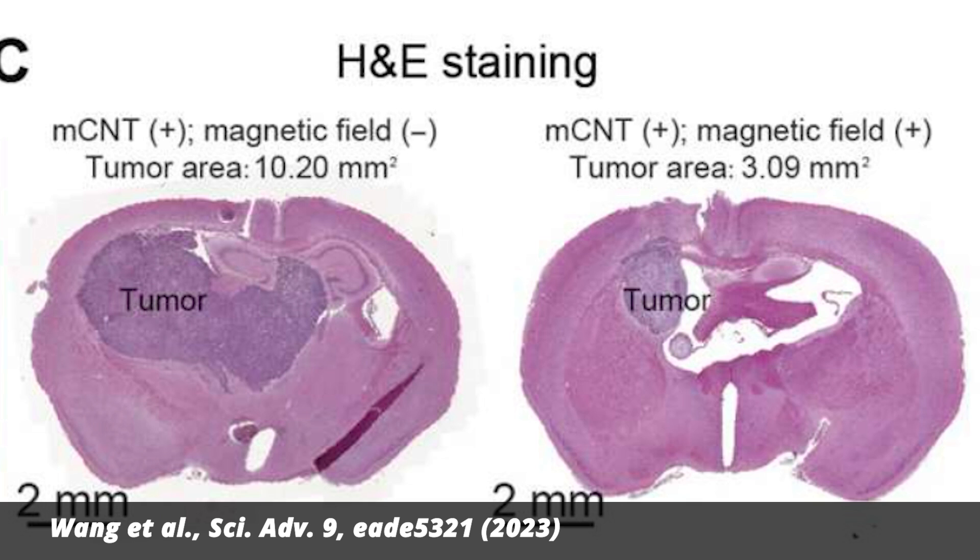You can see the difference it made for the tumors here in the diagram. The tumor on the left hasn't been treated with the magnet. It's more than 10 square millimeters. On the right, the tumor has been treated. It's about 3 square millimeters. The process worked on all types of glioblastomas, including those that had become resistant to chemotherapy. It's a precision treatment that could potentially be adapted for other cancers. But please don't try it at home.